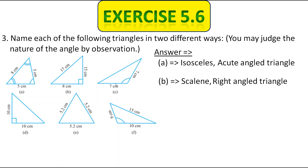Next, two sides are equal so it is isosceles, and one angle is greater than 90 degrees — you can observe it carefully — so it is also called an obtuse angle triangle.